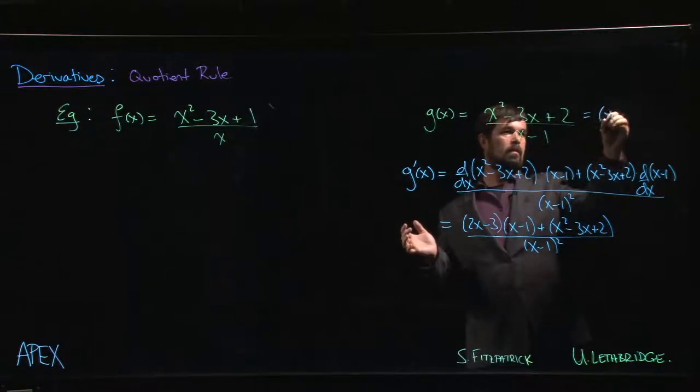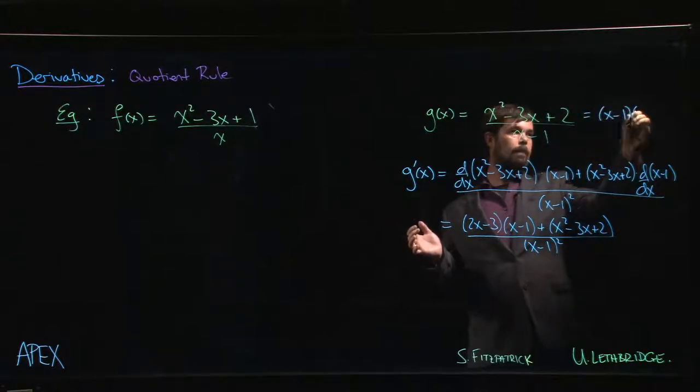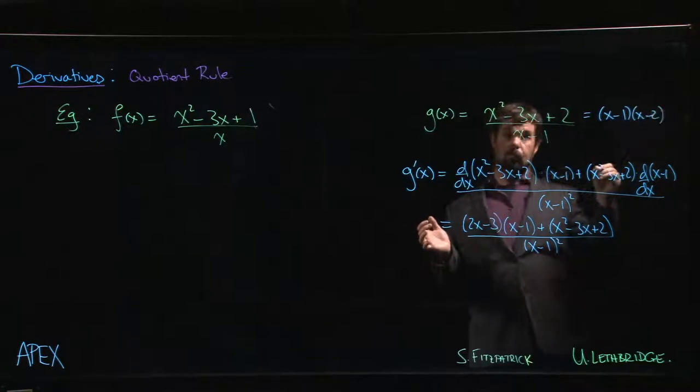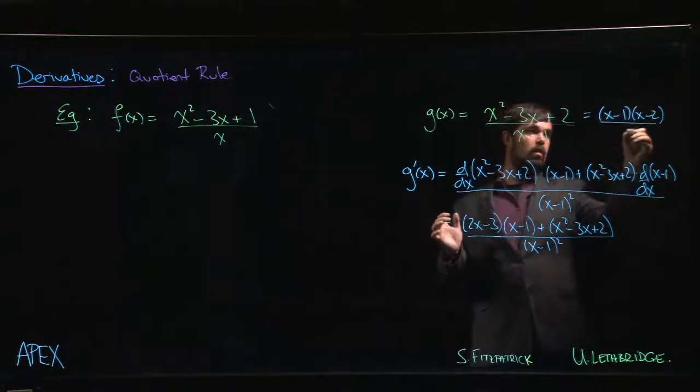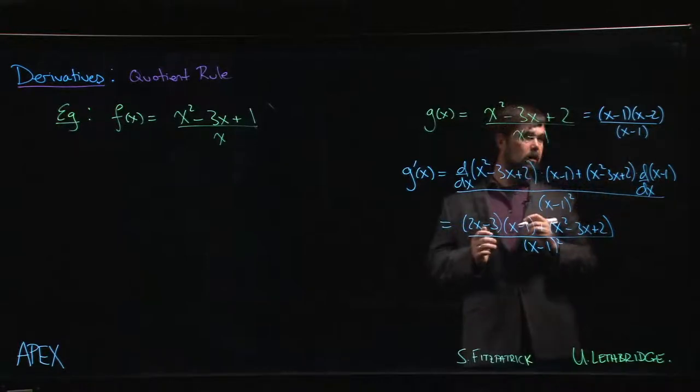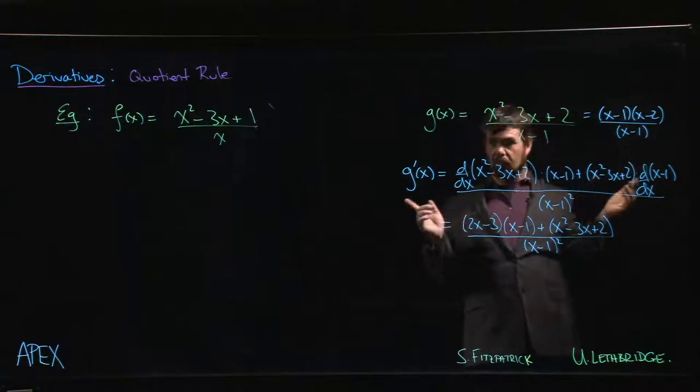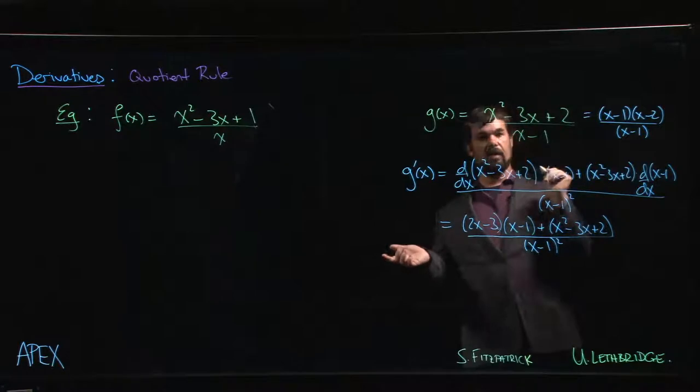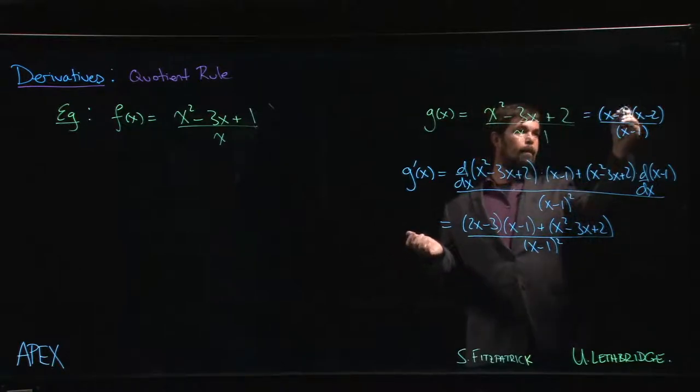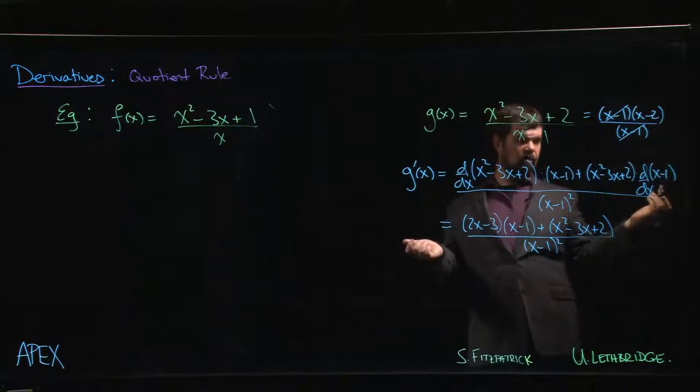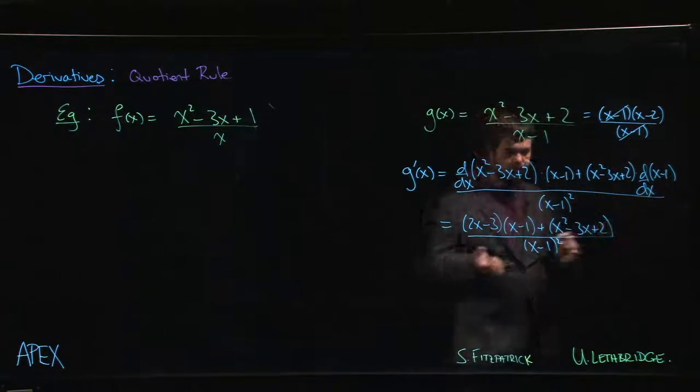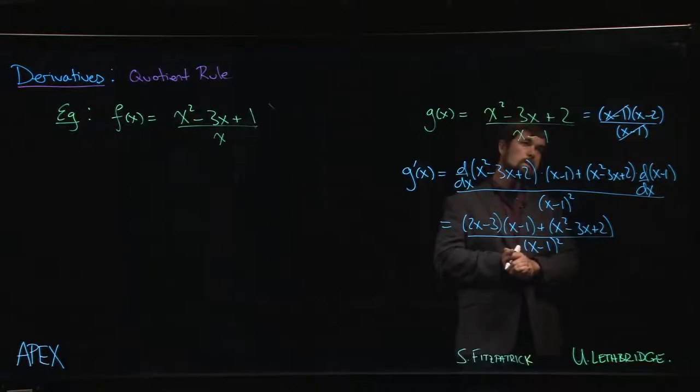We know how to factor quadratics. This is going to be x minus 1 times x minus 2 over x minus 1. Aside from the fact that this is undefined when x equals 1, I can cancel. I'm just left with x minus 2. And so the derivative of x minus 2 is just 1.